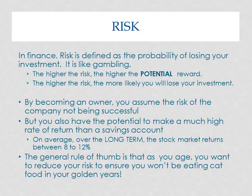The general rule of thumb is that as you age, you want to reduce your risk to ensure you won't be eating cat food in your golden years. When you're young, you can engage in a lot more risk. As you are entering your 50s, you want to make sure that your risk is minimized, because you want to be able to guarantee a certain amount of income for your retirement years.